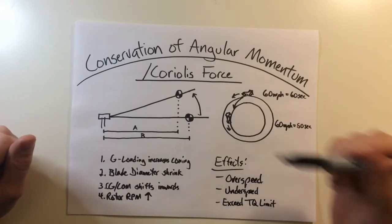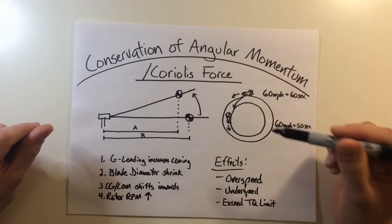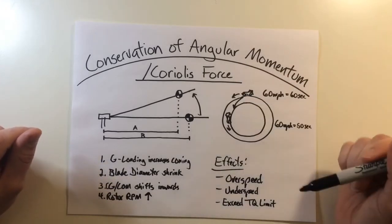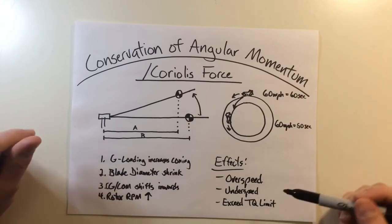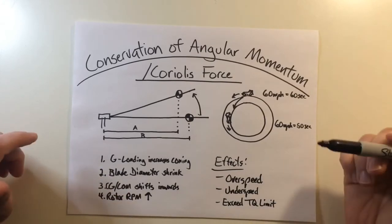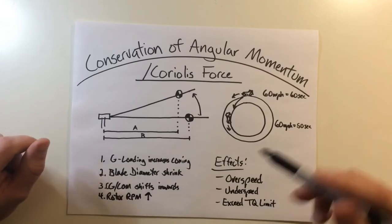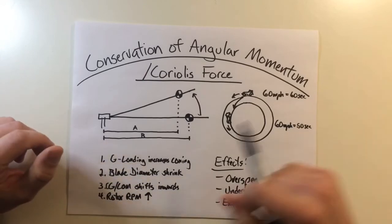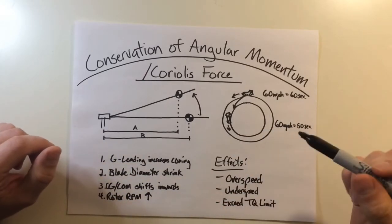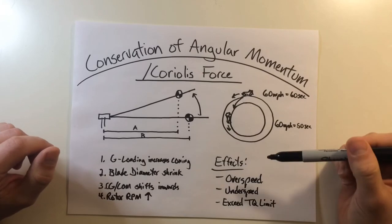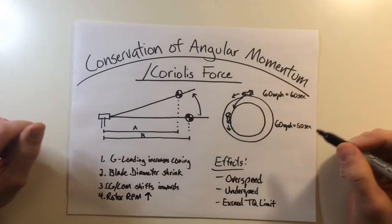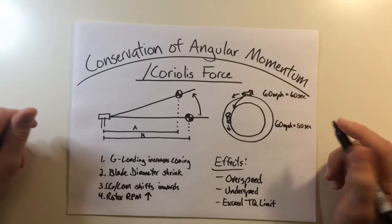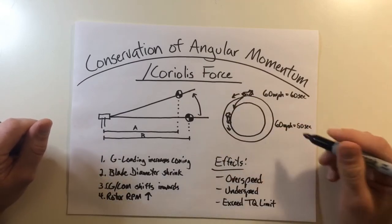The biggest takeaway is that the rotor always wants to maintain its momentum and that as the rotor cones due to G loading, it has a tendency to speed up and vice versa. This can cause limitations in the aircraft, whether that be overspeed, underspeed, or exceeding a torque limit. This can cause a lot of issues with some newer pilots because they're not really sure how to predict these. So the biggest thing is to understand where these shifts in angular momentum, these shifts in rotor RPM can come from so that you can better be ready for it with collective application prior to exceeding some kind of limit such as these.